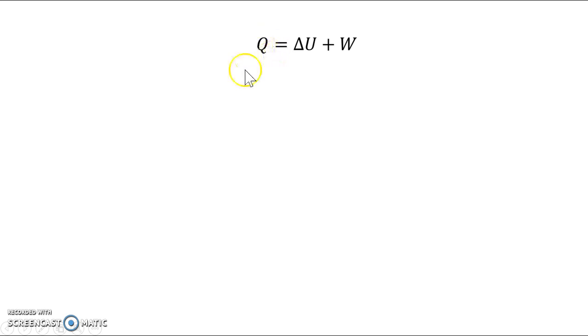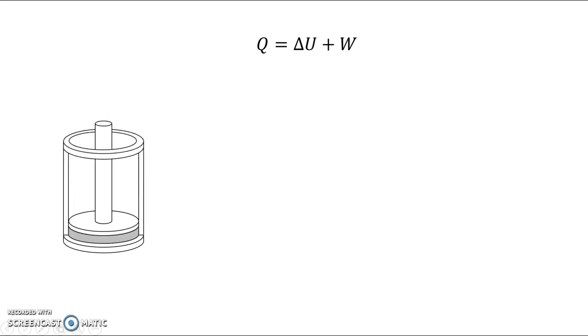We've seen also that you can take heat out of the system, you can decrease the internal energy, and you can make the gas compress so that work is being done on the gas. Today we're going to look at different types of processes and the PV graphs they make.